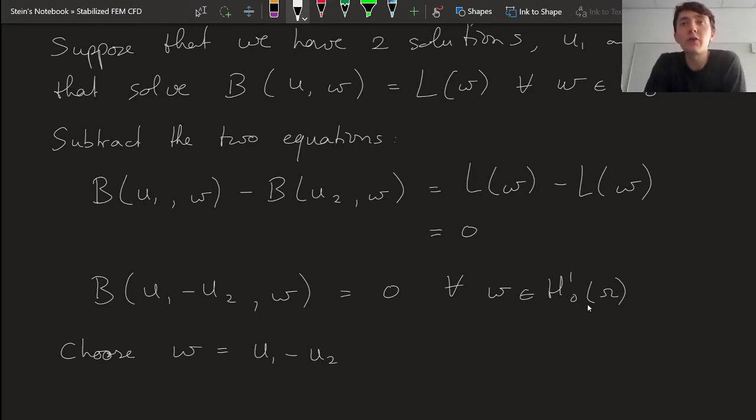Now, let's be clear, this has to be true for all possible choices w. So it also has to be true for this choice because u₁ minus u₂, well, it certainly lives in H₁⁰, because both u₁ and u₂ live in H₁⁰.